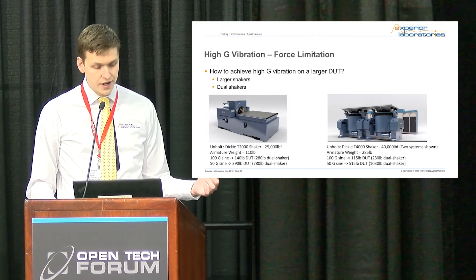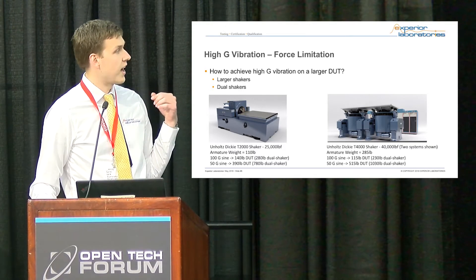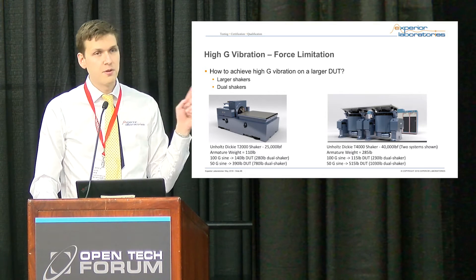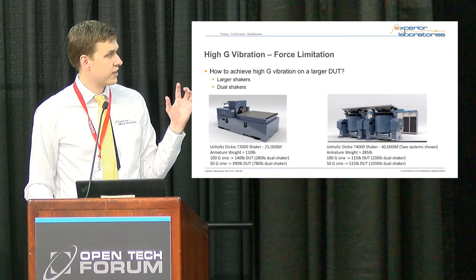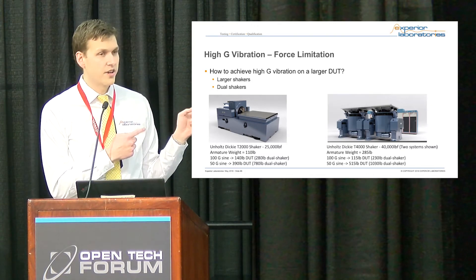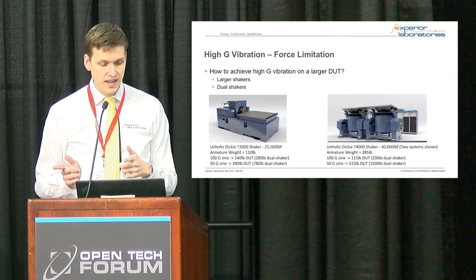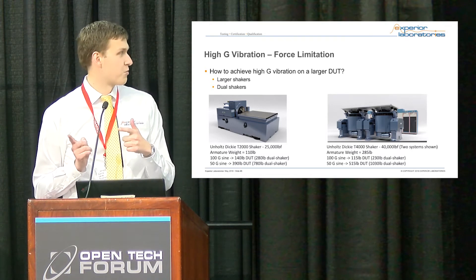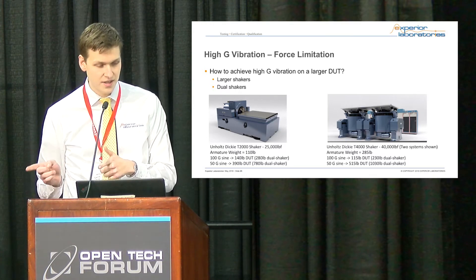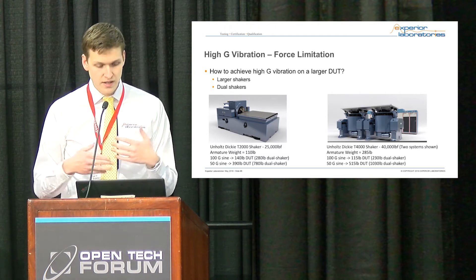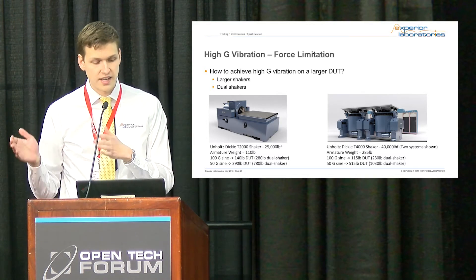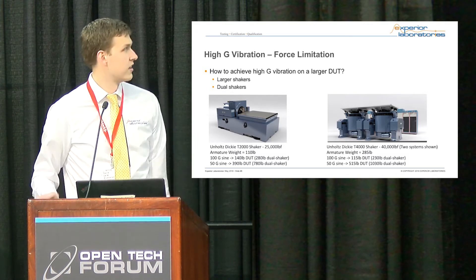One thing to keep in mind is that since the T4000 shakers are much larger, they're really designed for systems-level tests. The armatures on each shaker are 285 pounds. So if you're looking at a 100 G sine, you actually can't run a 140-pound DUT on a T4000, even though you can on a T2000 — there's a break-even point. At 50 G sine you can run more on the T4000; at 100 G sine you can run more on the T2000.